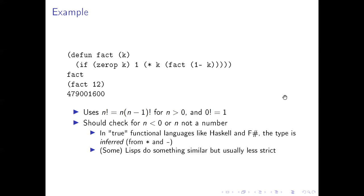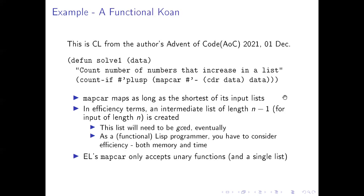If you want to check for a negative input, you want to do that outside of the main calculation so the calculation can proceed as cleanly as possible, because if you start from a positive number and count down to zero, you know mathematically it will never be negative.